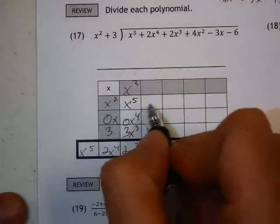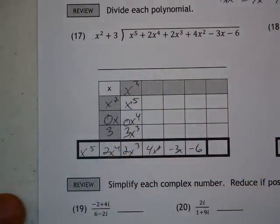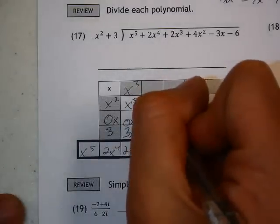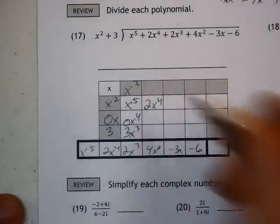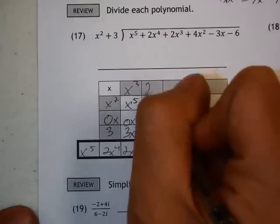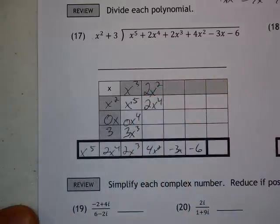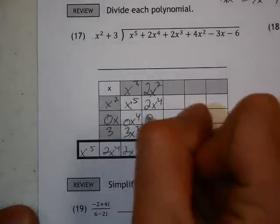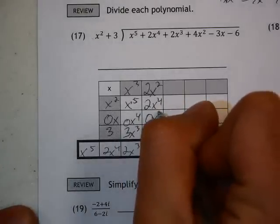Now, these two, the x to the 4th have to add up to be 2x to the 4th. So, this is going to be 2x to the 4th, which means that this has to be 2x squared, which means that this has to be 0x to the 3rd.